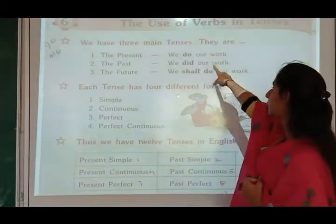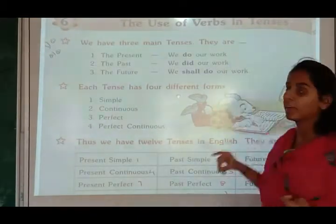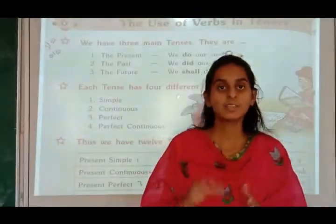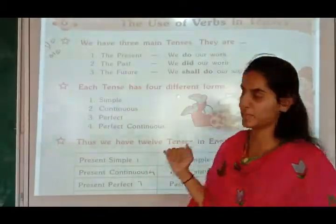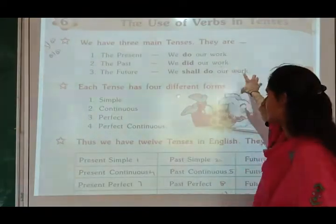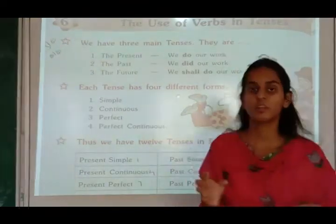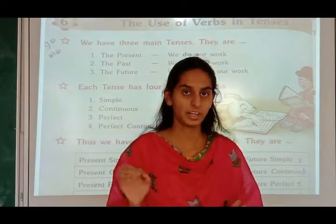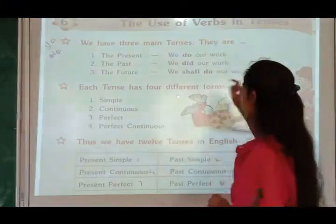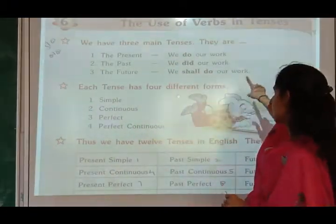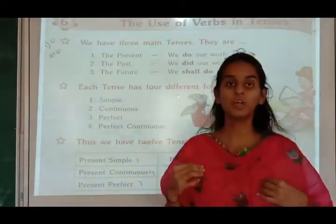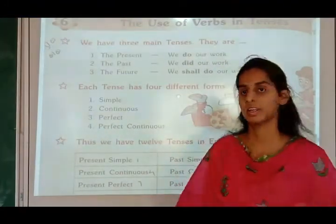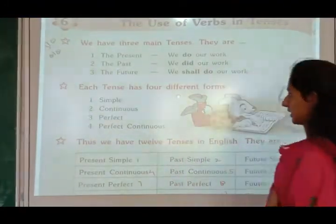There are examples: 'We do our work' means we are doing our work, and that is present tense. 'We did our work' means the work which is already done by us — that is past tense. 'We shall do our work' means we will do our work — it is future tense.